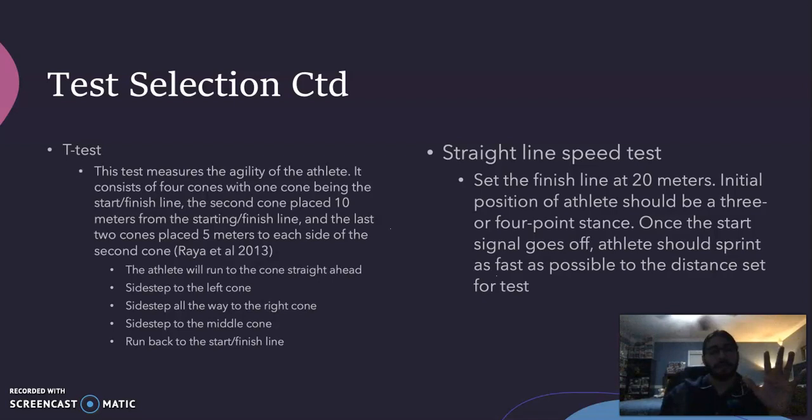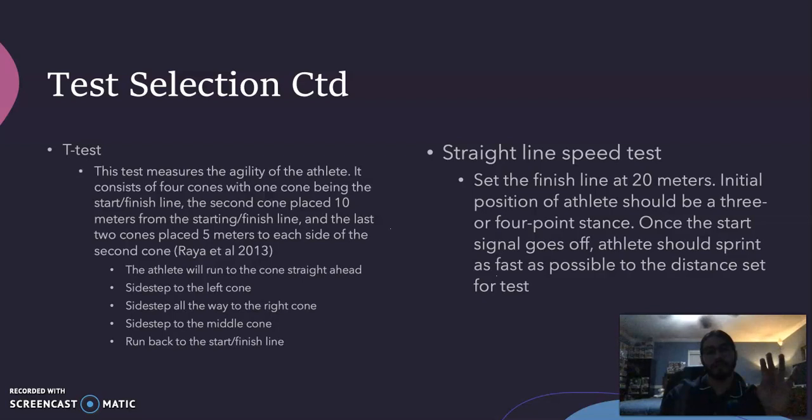For the T-test setup: four cones are used — one as the start/finish line, a second cone placed 10 meters from the start, and the last two cones placed five meters to each side of the second cone. The athlete runs straight to the second cone, side-steps to the left cone, side-steps all the way to the right cone, side-steps back to the middle cone, and runs back to the start/finish line.